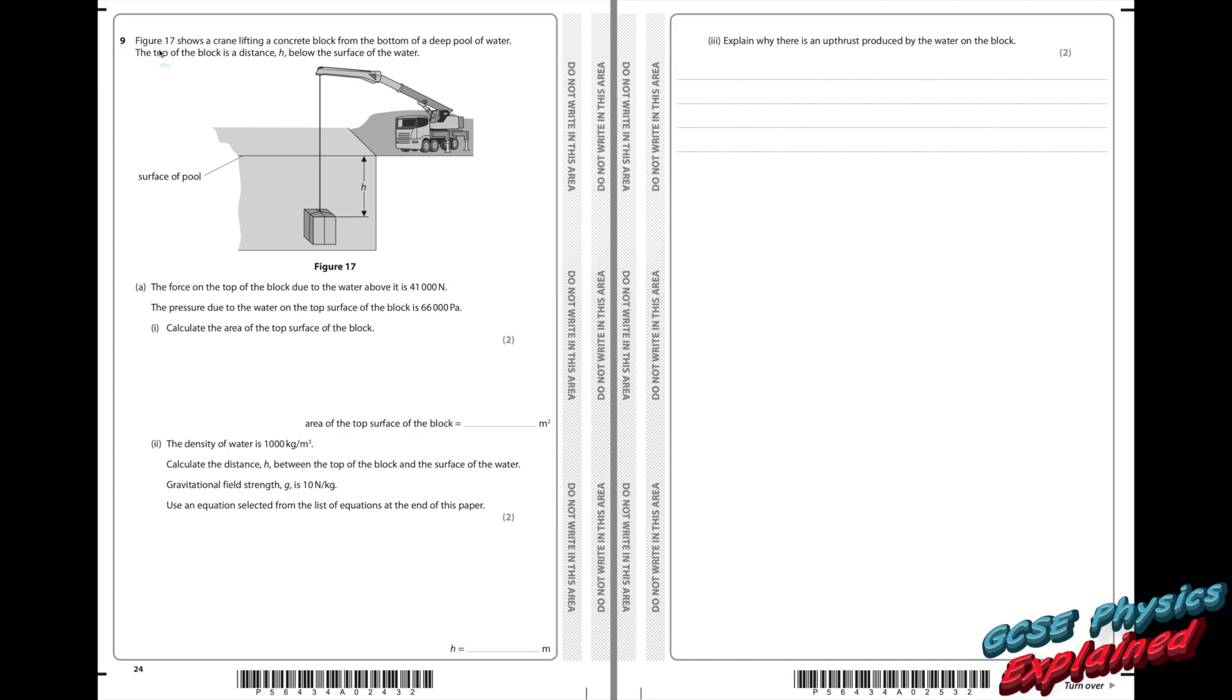Question 9. Figure 17 shows a crane lifting a concrete block from the bottom of a deep pool of water. The top of the block is a distance h below the surface of the water. The force on the top of the block due to the water above it is 41,000 newtons. The pressure due to the water at the top surface of the block is 66,000 pascals. Calculate the area of the top surface of the block.